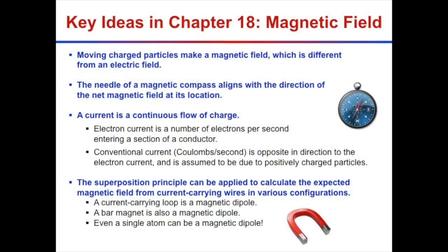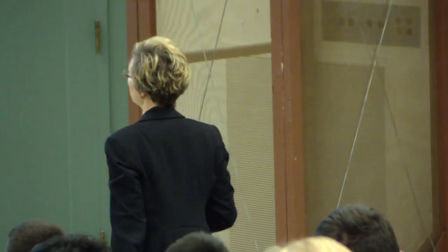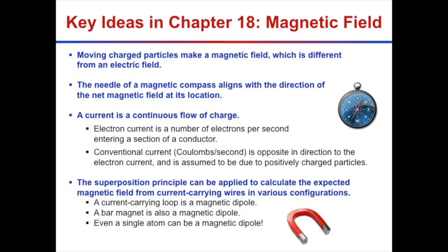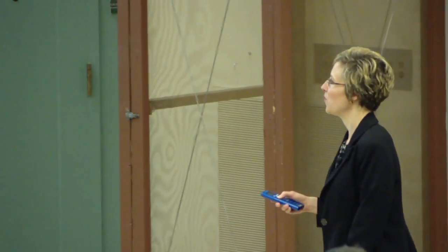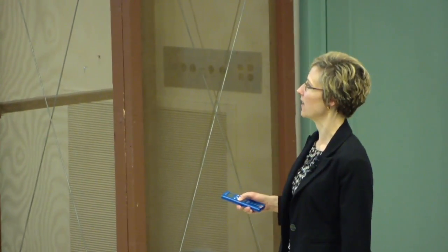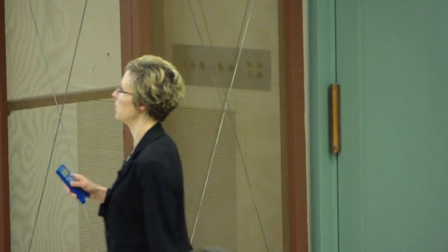A current is a continuous flow of charge. Think of a crowd going down a hallway — if it's large enough, you quit tracking individual people and just say there's a crowd of people moving by. That's the case of continuous current. The electron current is defined as the number of electrons per second. Conventional current is when we pretend the current is carried by positively charged particles.